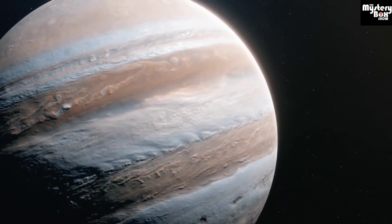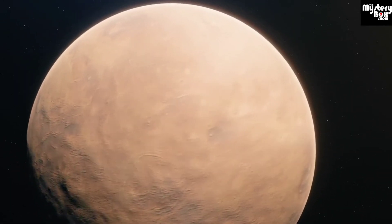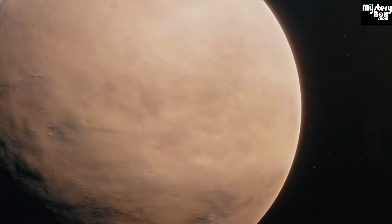One day on Jupiter takes just 10 Earth hours. One day on Venus takes 243 Earth days.